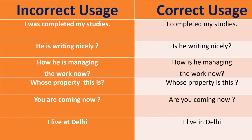'I pray God' — correct: 'I pray to God.' After words like prefer, listen, refer, inferior, superior, junior, senior, and pray, we use the preposition 'to.' 'I was completed my studies' — correct: 'I completed my studies.' 'He is writing nicely?' — in a question, the helping verb comes first, followed by the subject: 'Is he writing nicely?'